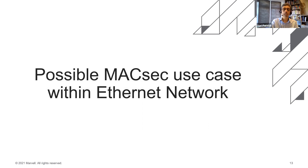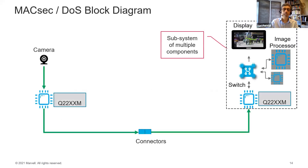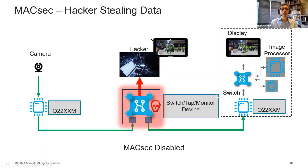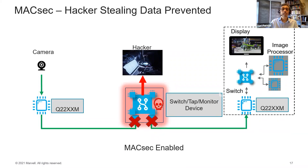Possible MacSec use cases within the Ethernet network in the automotive environment. Here we see an example where a camera is connected to a display through the Ethernet network through an inline connector — through an Ethernet PHY, through a switch, possibly through an image processing system, and then to a display. If a hacker is able to tap in, perhaps via an inline connector using a switch, and monitor the actual device, the hacker is able to steal the data because MacSec is still disabled at this point.